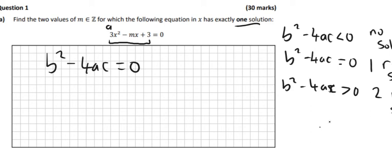So our a is 3, our b is minus m, and our c is 3. So I'm just going to fill those in. So minus m squared minus 4 times whatever a is, so that's 3 times c, which is 3 as well, has to still be equal to zero.